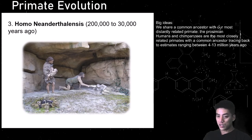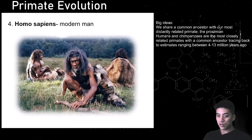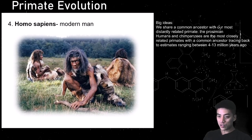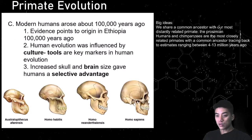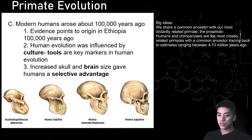And now we have Homo sapiens — the modern man. This species is capable of hunting, using tools, forming families, and banding together with other groups of humans. Modern humans arose about 100,000 years ago and the origins are from Ethiopia. Archaeologists have found remnants of these societies, and human evolution was influenced by culture — tools are key markers in human evolution, allowing you to see their advancement and technology.